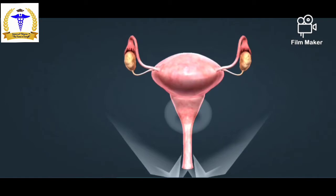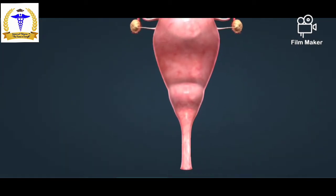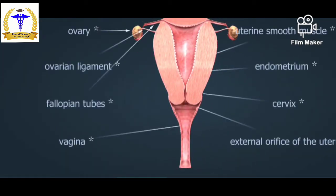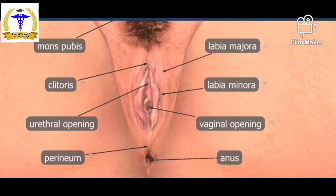Next, we will discuss the cross-section of the internal reproductive organs: ovary, ovarian ligament, fallopian tubes, vagina, uterine smooth muscles, endometrium, cervix, and the external orifice of the uterus. These are the cross-section structures of the internal reproductive organs.